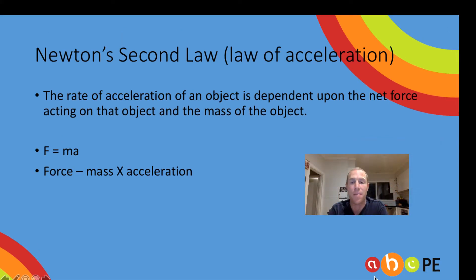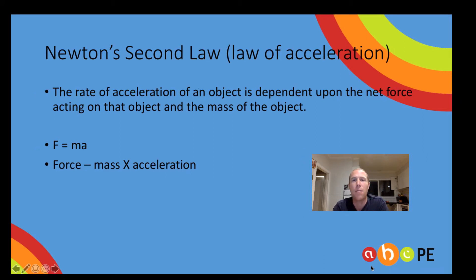So what does that mean? Well, in simple terms, to produce maximal force you need to have mass and acceleration as high as possible. Take David Warner for example — he uses one of the heaviest bats in world cricket and he can accelerate it very fast. Therefore, in relation to Newton's second law, he produces a lot of force against the ball and as a consequence it goes a long, long way.